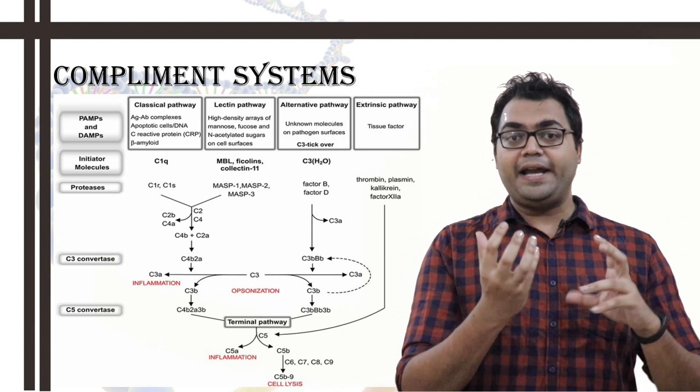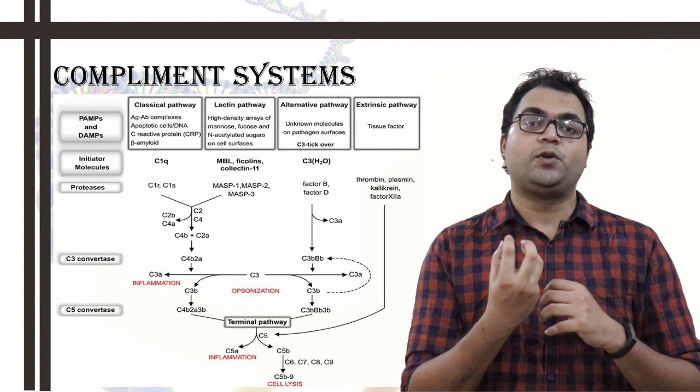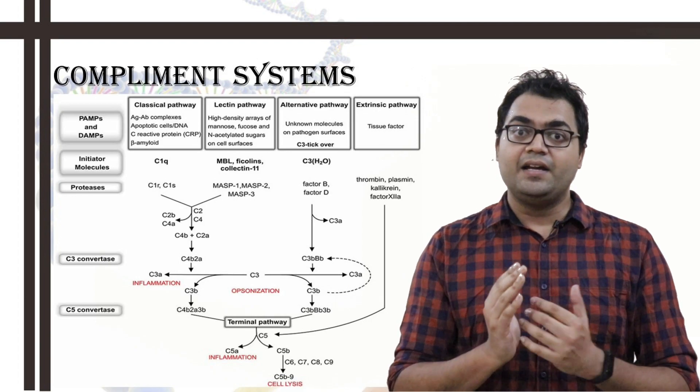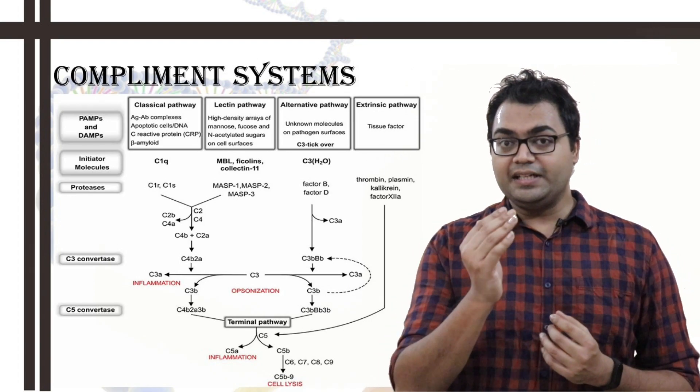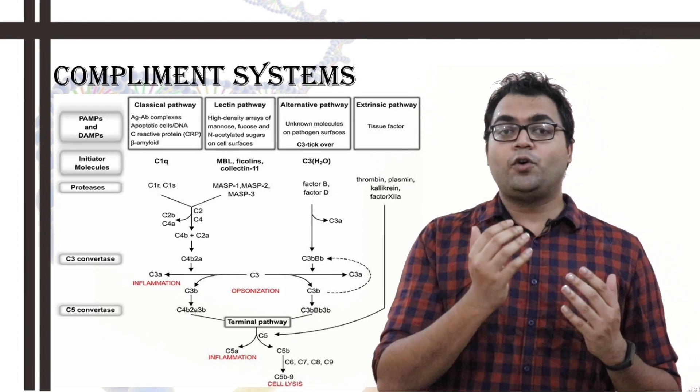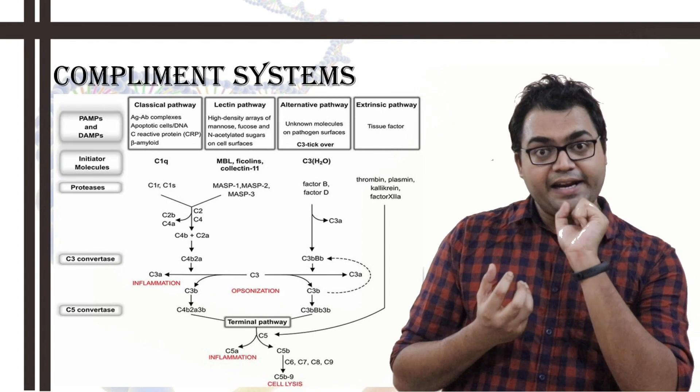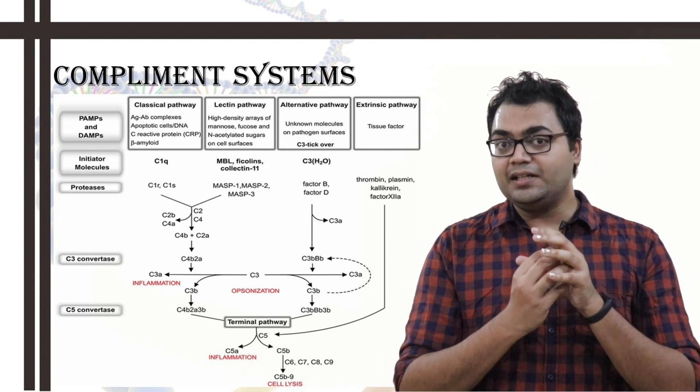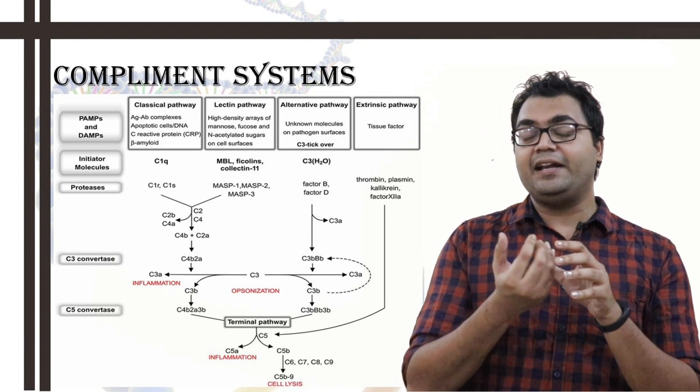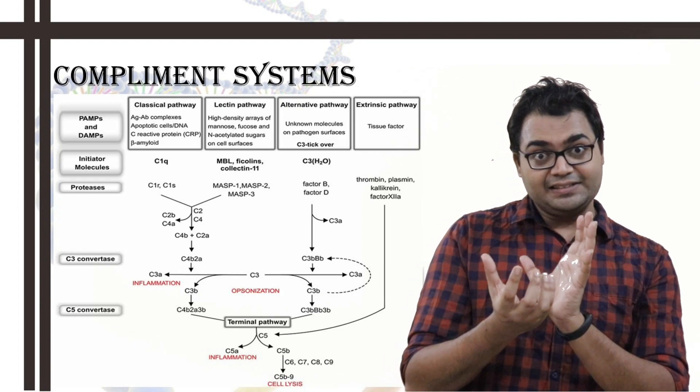So, thereby, C4b2a molecule is formed. This specific macromolecular complex is formed. Now, C4b2a contains the C3 convertase activity, which can cleave C3 and form C3a and C3b.